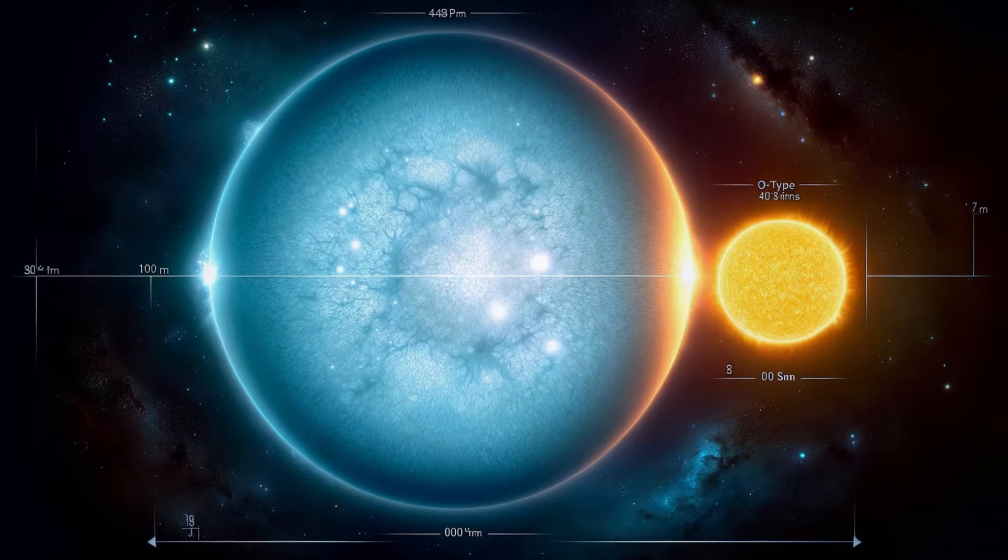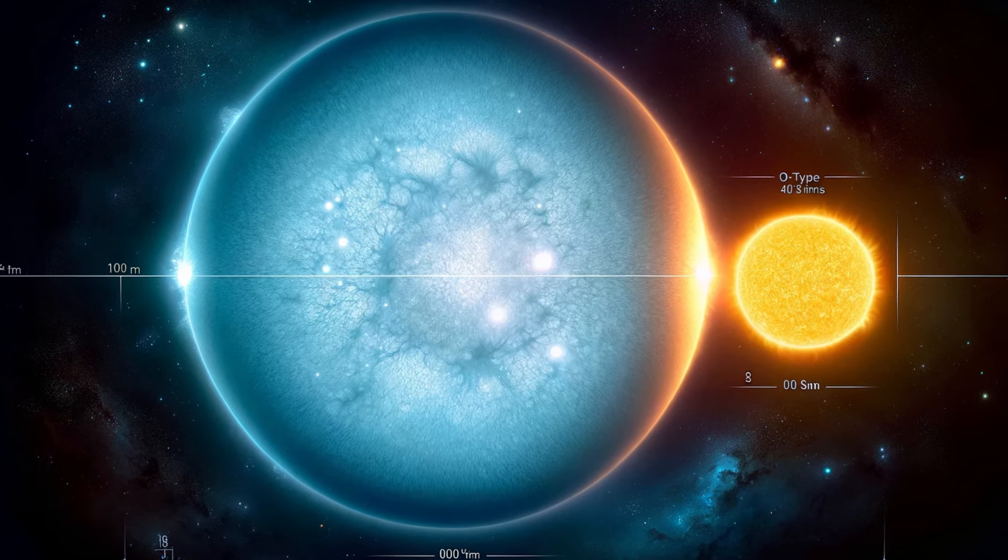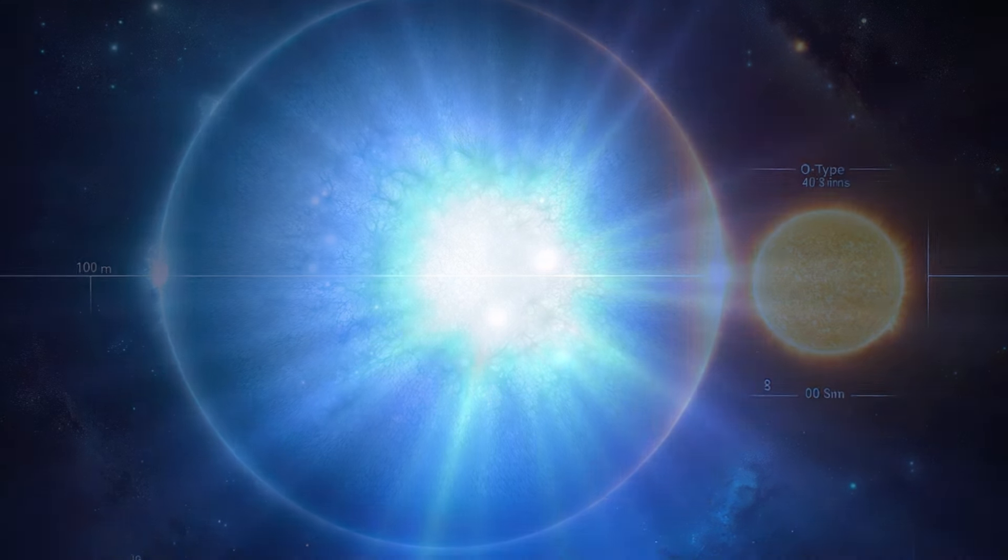Their exceptional brightness is due to both their high temperatures and large sizes, which significantly outshine many other types of stars. These stars are extremely massive, typically having 15 to 90 times the mass of the Sun, and in some cases even more. Their radius can be several times that of the Sun, contributing to their vast luminosity.